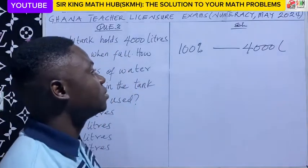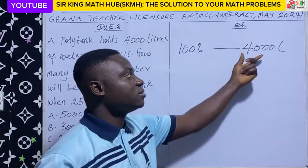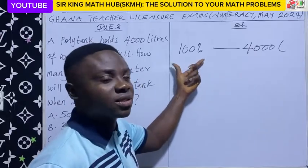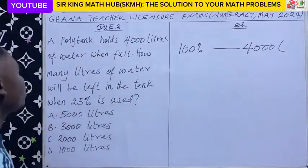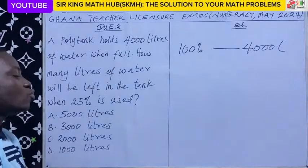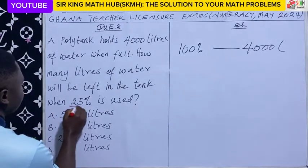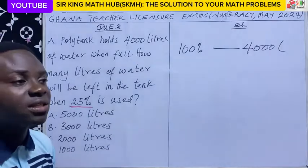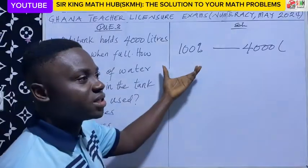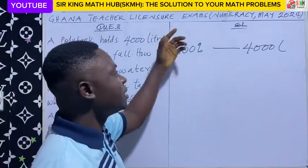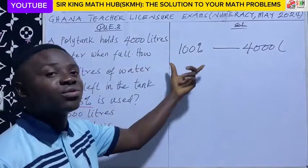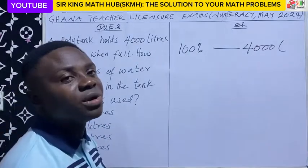As we have said, the original quantity, that is 4,000 litres, must correspond to 100%. We are told to find how many litres of water will be left in the tank when 25% of the water in the polytank is used. So we know the original quantity is 100%, and we have used 25% out of the 100%. What will be the remaining percentage?